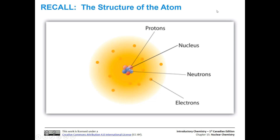Before we get started talking about nuclear chemistry, we're going to remind ourselves of the basic structure of the atom. Here's a picture showing us what we have seen before. You can see here is the nucleus, and inside the nucleus we have protons and neutrons. We're going to be talking about changes within the nucleus in this section. We also have electrons as an electron cloud around the nucleus.